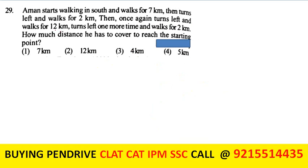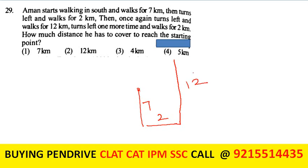A man starts walking south for 7 km, then turns left and walks 2 km east, then turns left and walks 12 km north, then turns left and walks 2 km west. Net north-south: 12 - 7 = 5 km north. The distance from the starting point is 5 km. The fourth option is the answer.